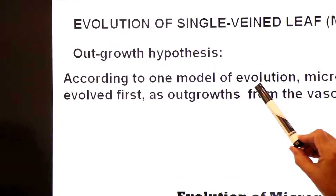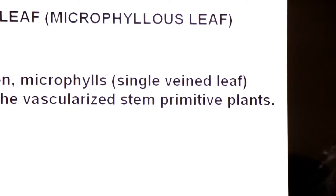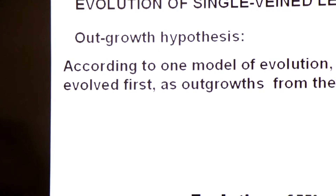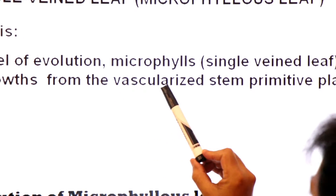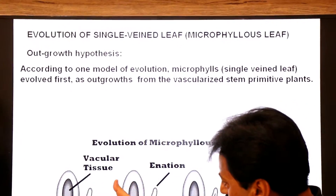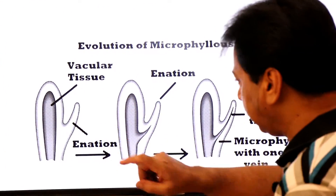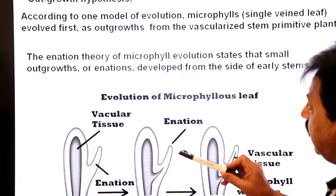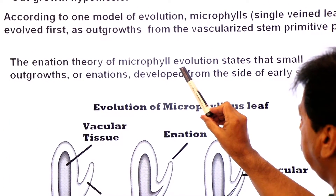According to one model of evolution, the microphyll — the single-vein leaf — evolved first as an outgrowth, called an enation, from the vascularized stem of primitive plants. Small outgrowths or enations developed from the side of the early stem. The enation theory of microphyll evolution states that vascular tissue of primitive plant stems began to extend towards the enation.